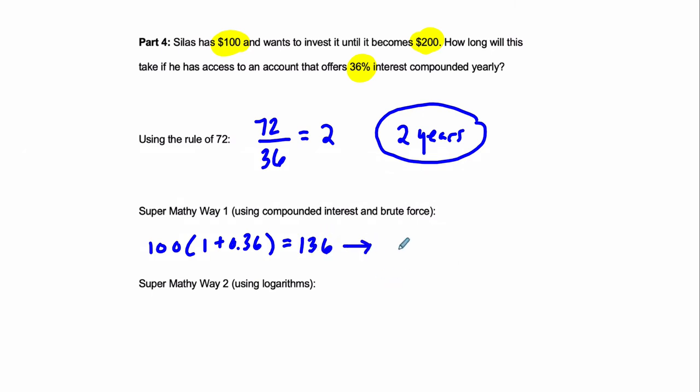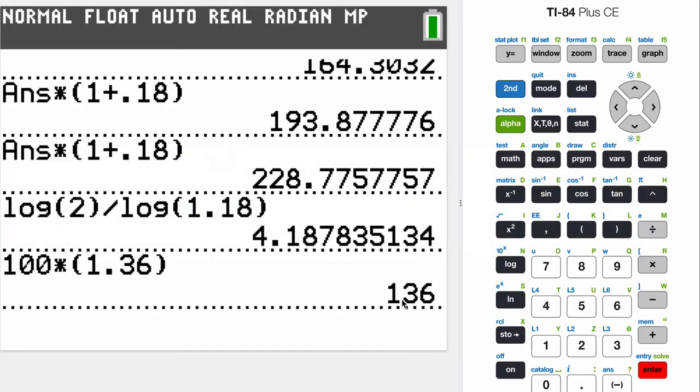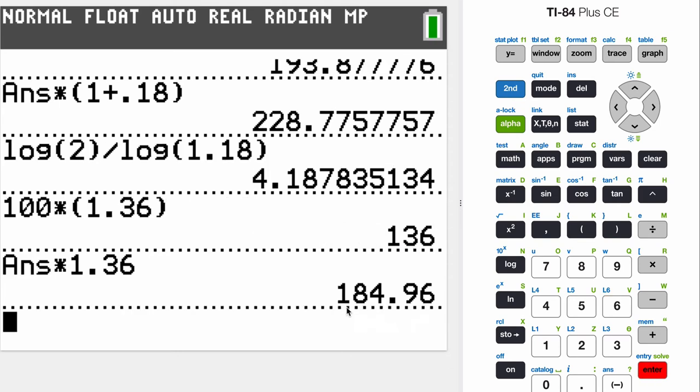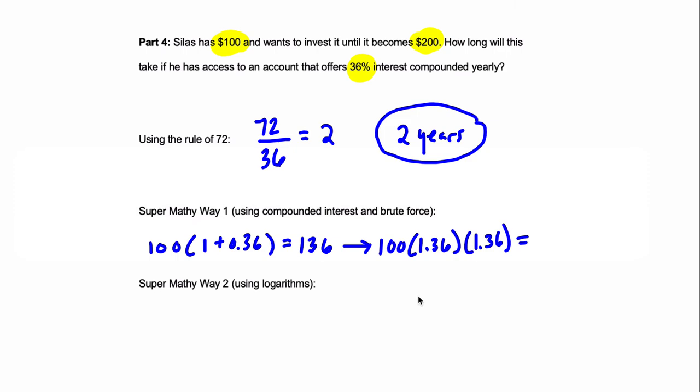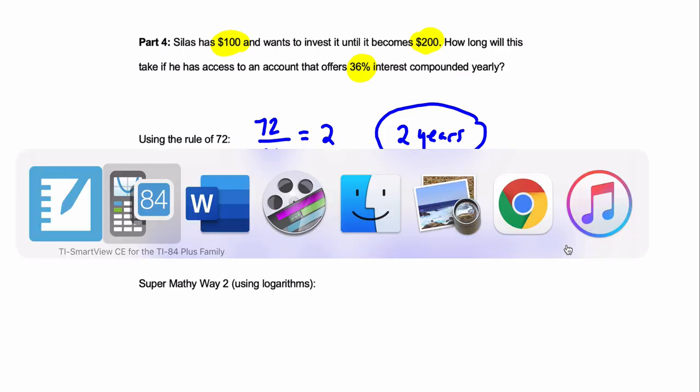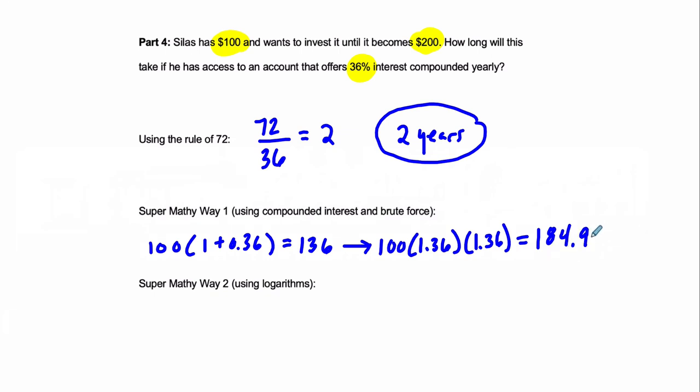Then, arrow here, we do it again. So you take the original amount of money you had, I'll just write it as 1.36, and multiply it by another 1.36. That's for two years. That's happening twice. So on the calculator, we can just take that previous value and then again multiply that by 1.36, and we get 184.96. You can see, actually, it's interesting here, 184.96. So you can see that we're not yet doubled yet, so we can tell it takes a third year to do this.